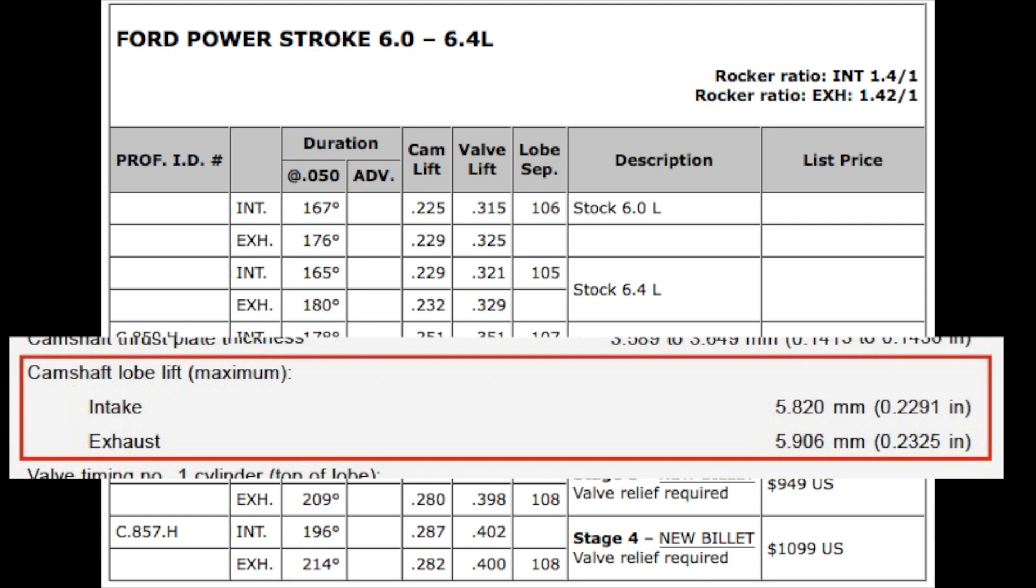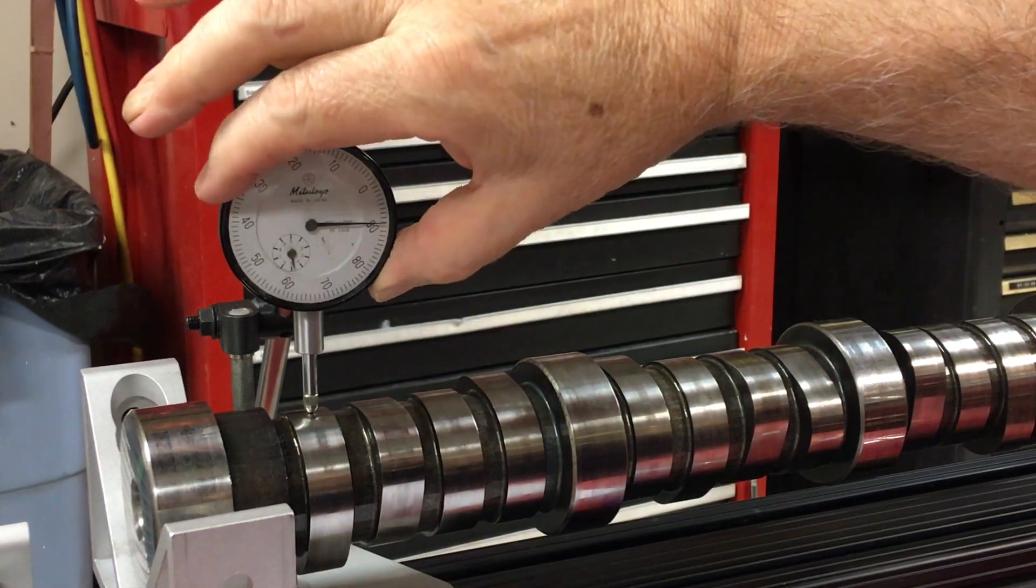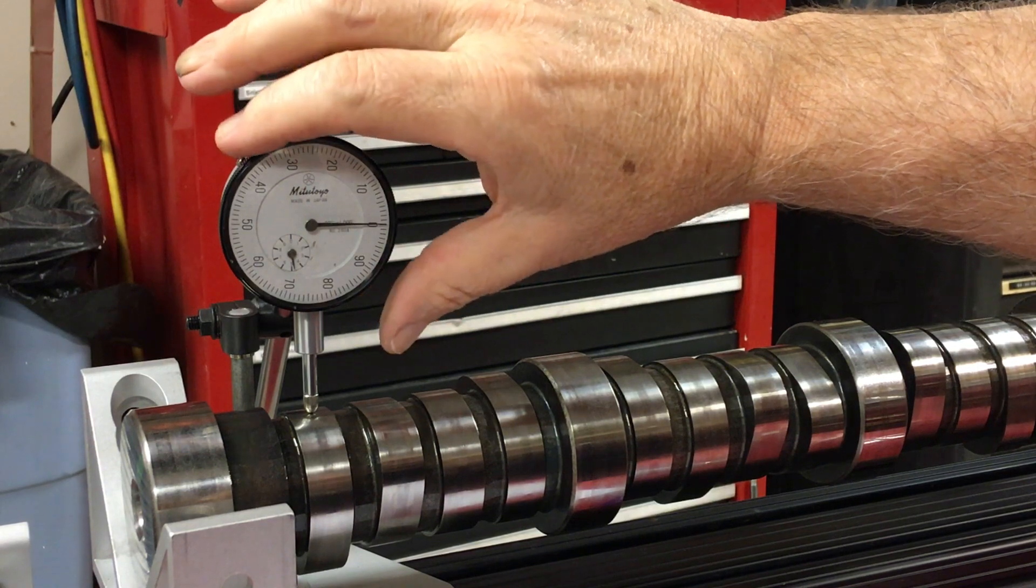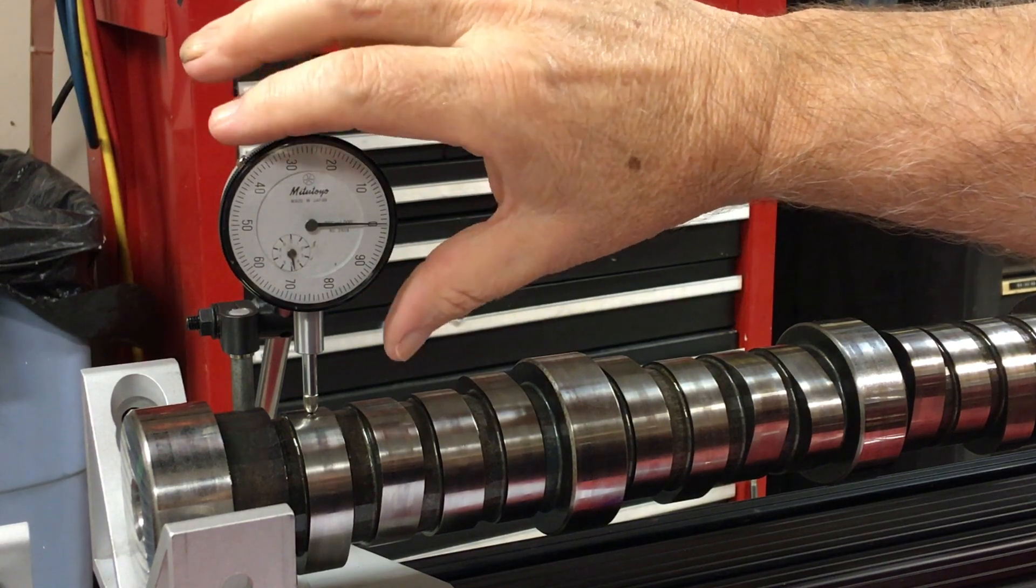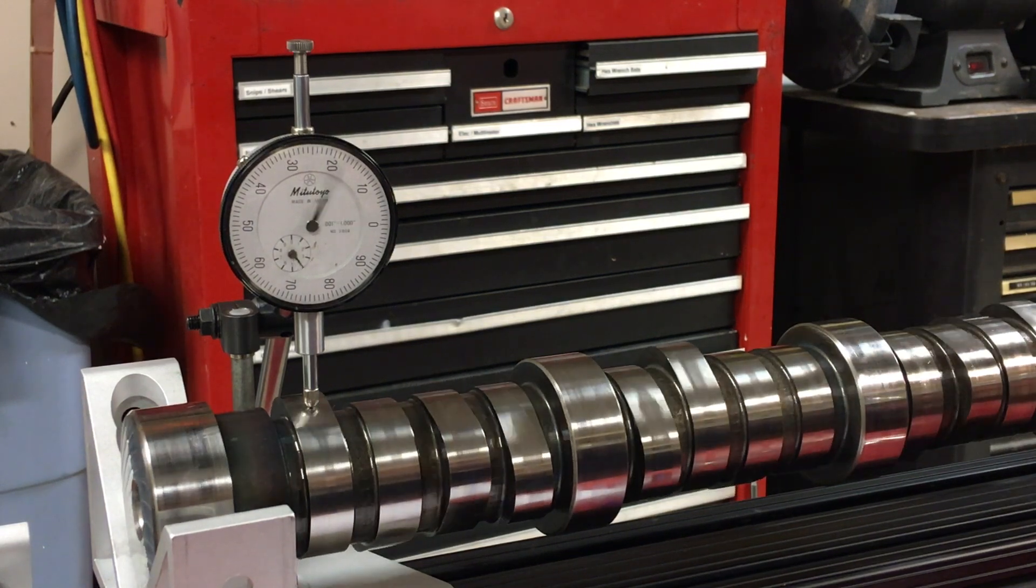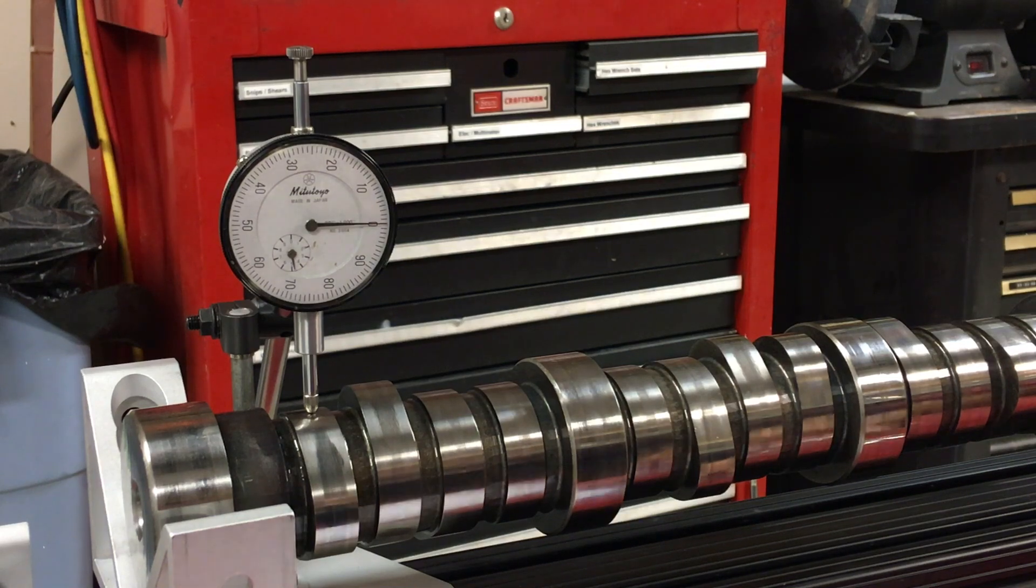So I'm going to measure the cam lobes and take you on a little journey. But also watch my zeroing the dial indicator. I'm only going to do the first four lobes. They are exhaust, intake, intake, and exhaust from the front of the motor. I did the rest but I won't put you through watching all of that on video.